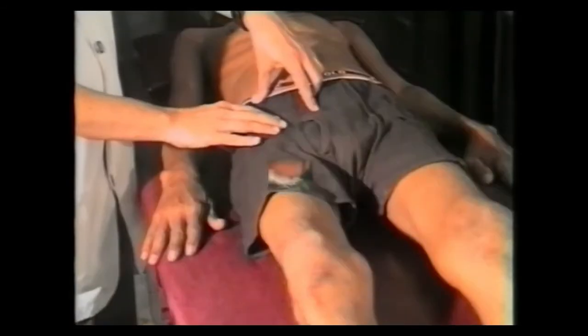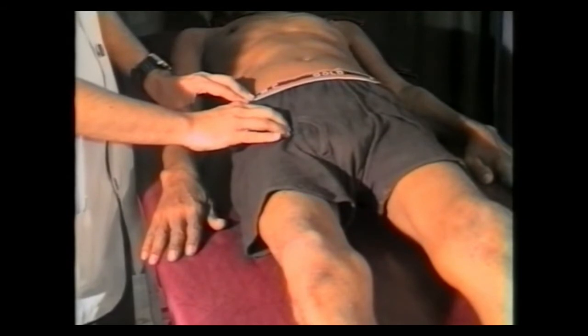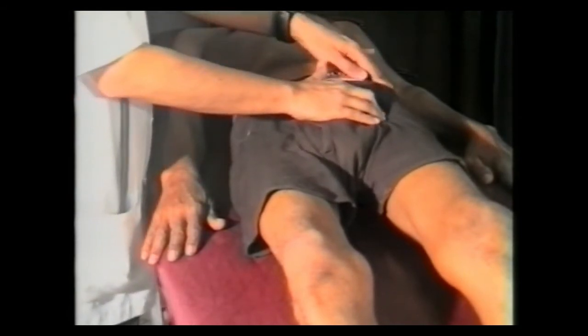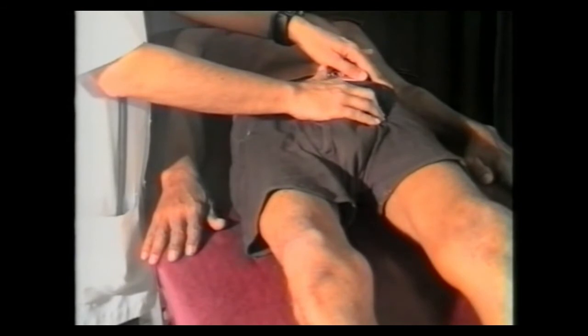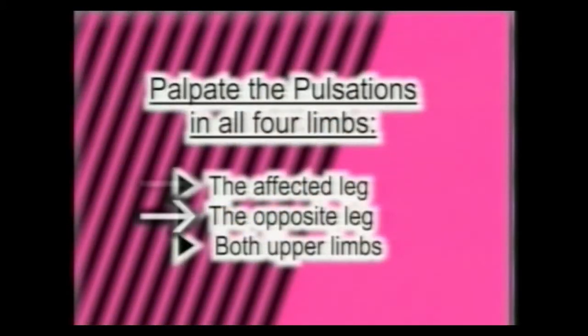For the femoral artery, with the patient lying supine, keep the leg slightly abducted and externally rotated to relax the deep fascia, and palpate in the line of the mid-inguinal point just below the inguinal ligament. The femoral artery is felt against the head of femur. Then palpate the abdominal aorta to the left of the midline in the epigastric and umbilical areas against the spine.